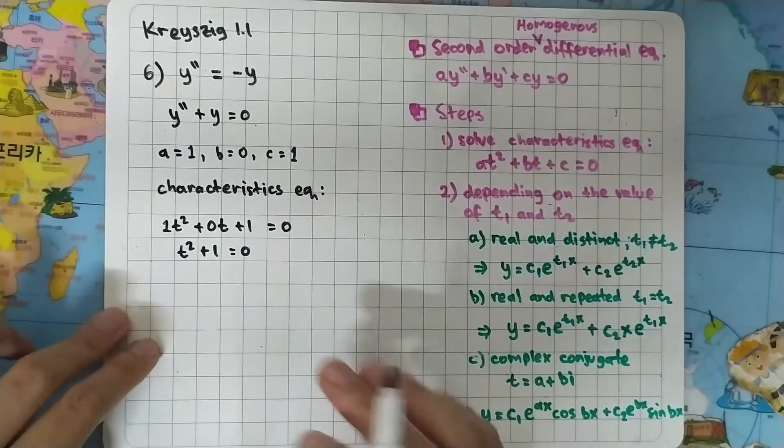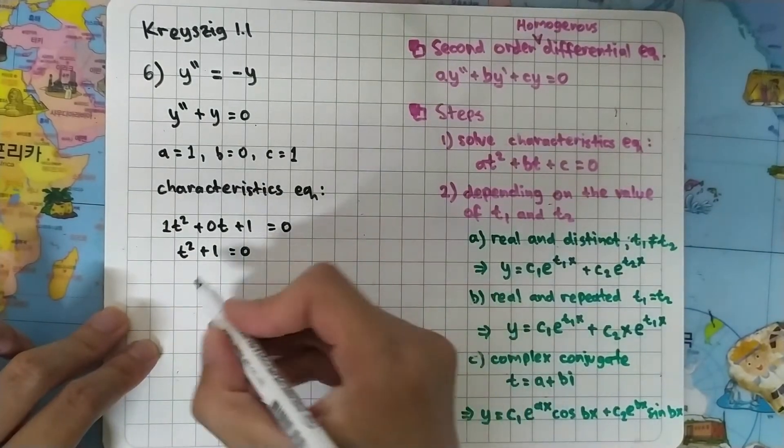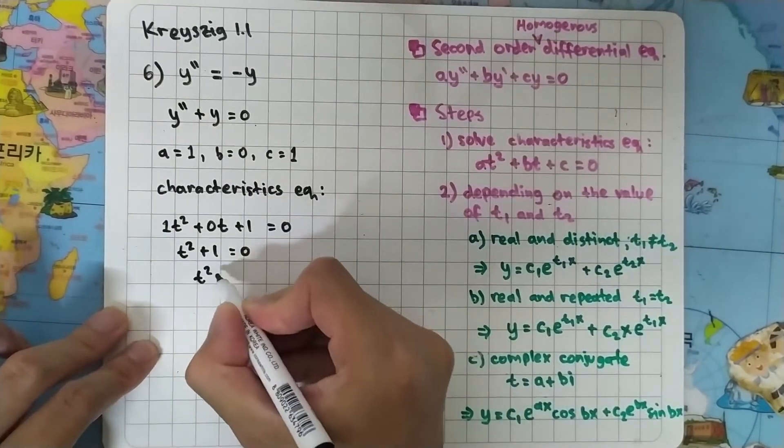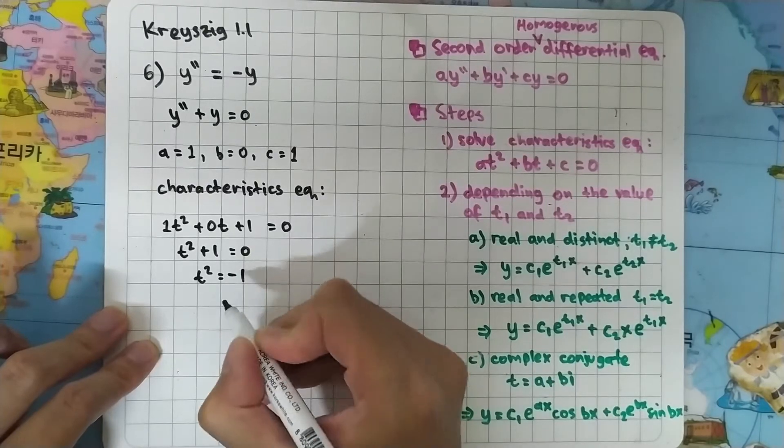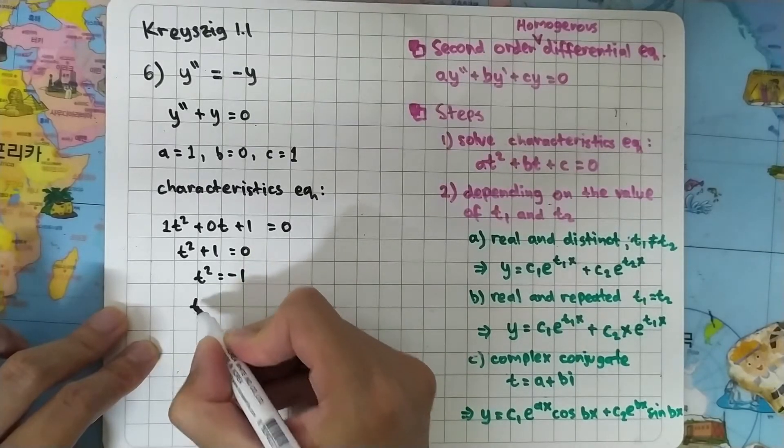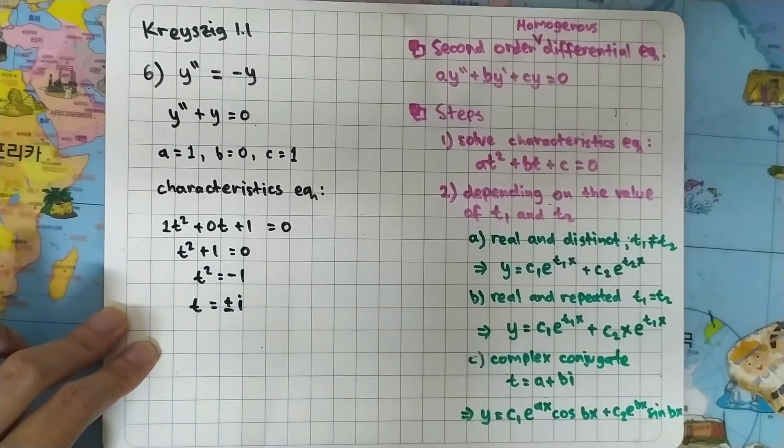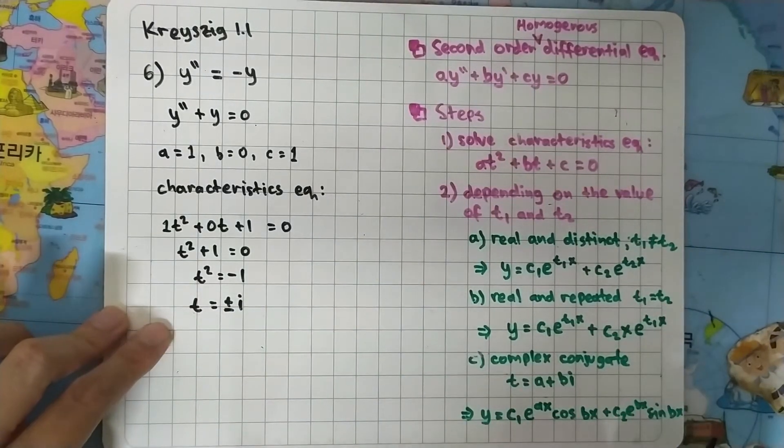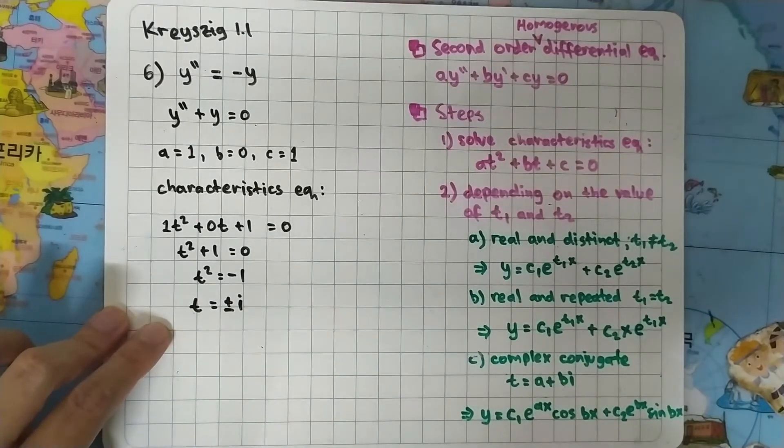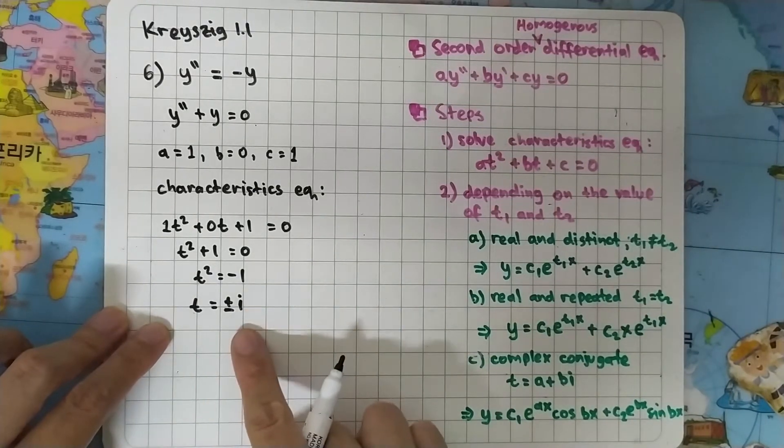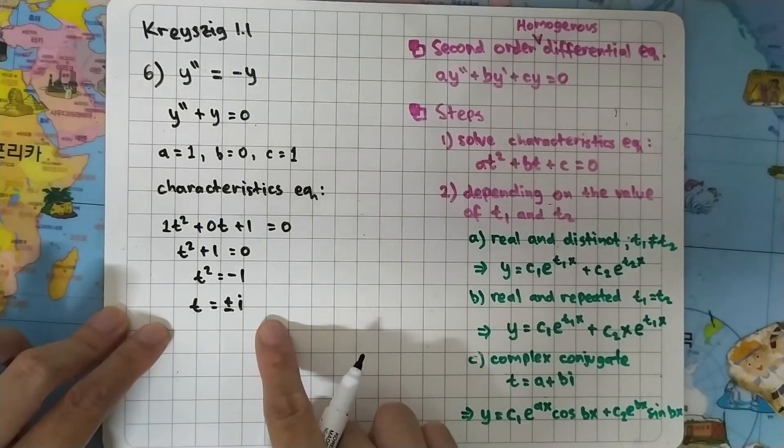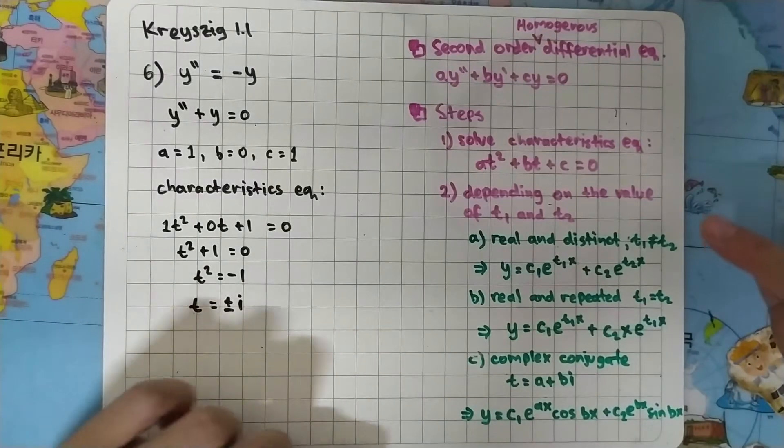We will have T squared equals minus one, or T equals plus or minus i. So the equation has complex conjugate roots, plus minus i.